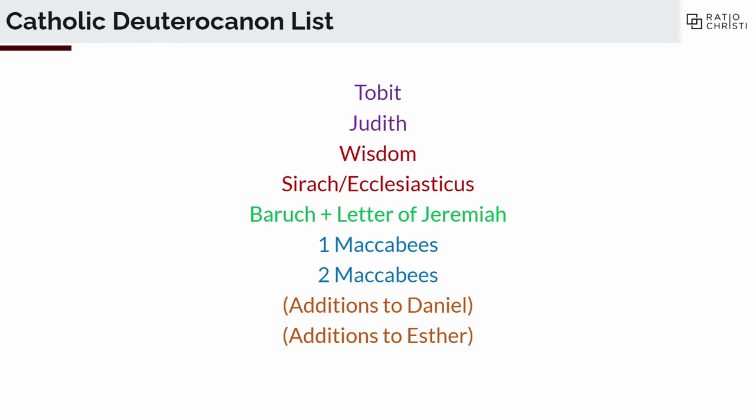Here's the list we talked about earlier, with the books in color so you can see the different genres — because it's not just one genre we're dealing with. There are all seven books. The genre of the first two, Tobit and Judith, is tales — they tell a story. If you're a Protestant, think about the story of Ruth; that's a fair comparison. Then Wisdom and Sirach, also called Ecclesiasticus or Wisdom of Ben Sirach, are wisdom literature — think Proverbs or Ecclesiastes.